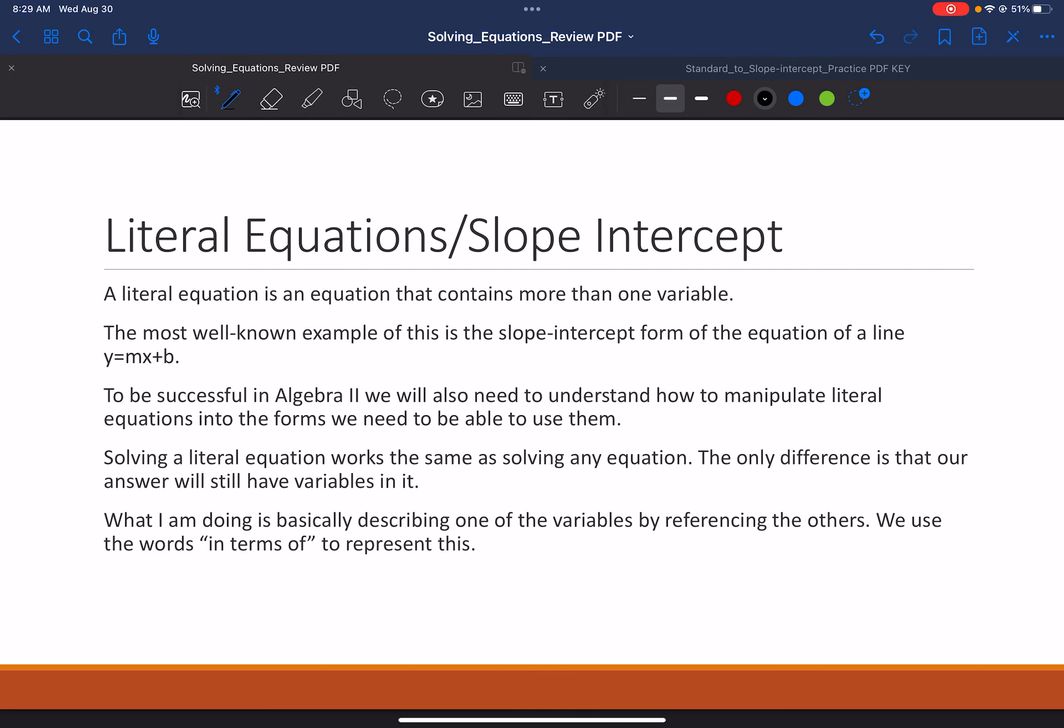So, now let's talk about literal equations and slope intercept form. Everything that we've done so far has had just one variable with it. Now, if we have something that is more than one variable, like y equals mx plus b, that is y and x, we're going to call that a literal equation.